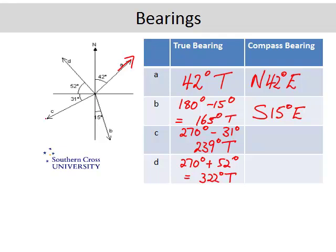With C, between north and south, it's going to be south. And from south around to it, this angle here is going to be 90 minus 31, which is going to be 59 degrees. So it is south, 59 degrees west.